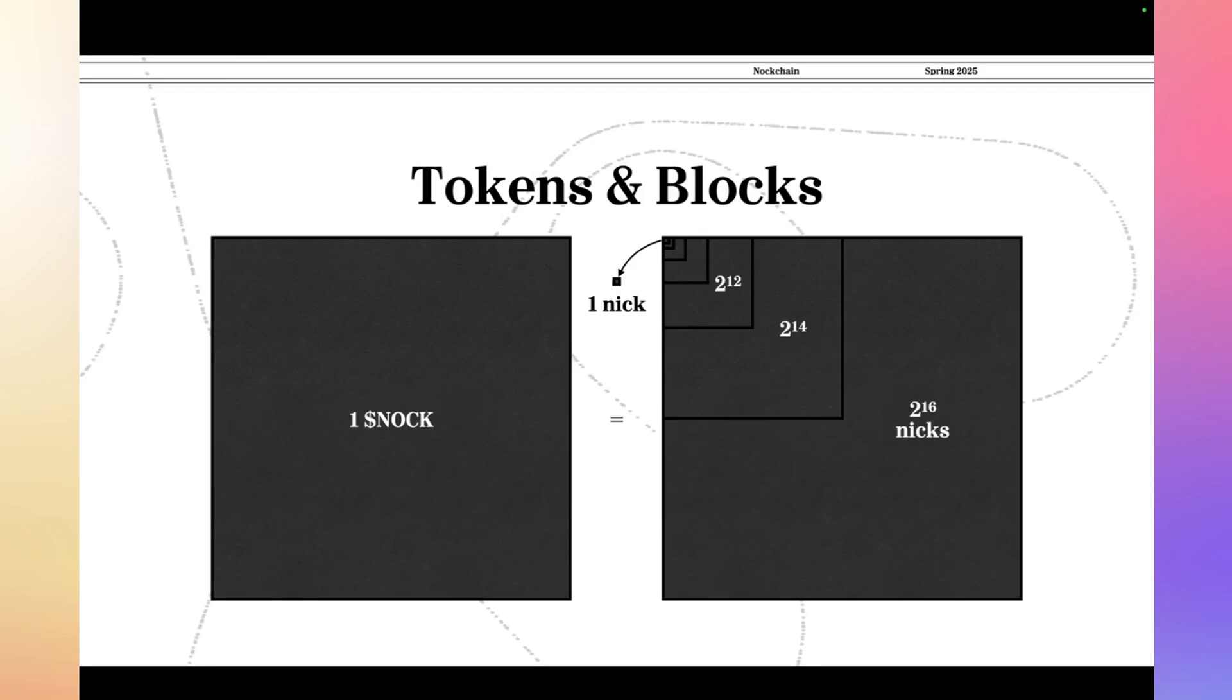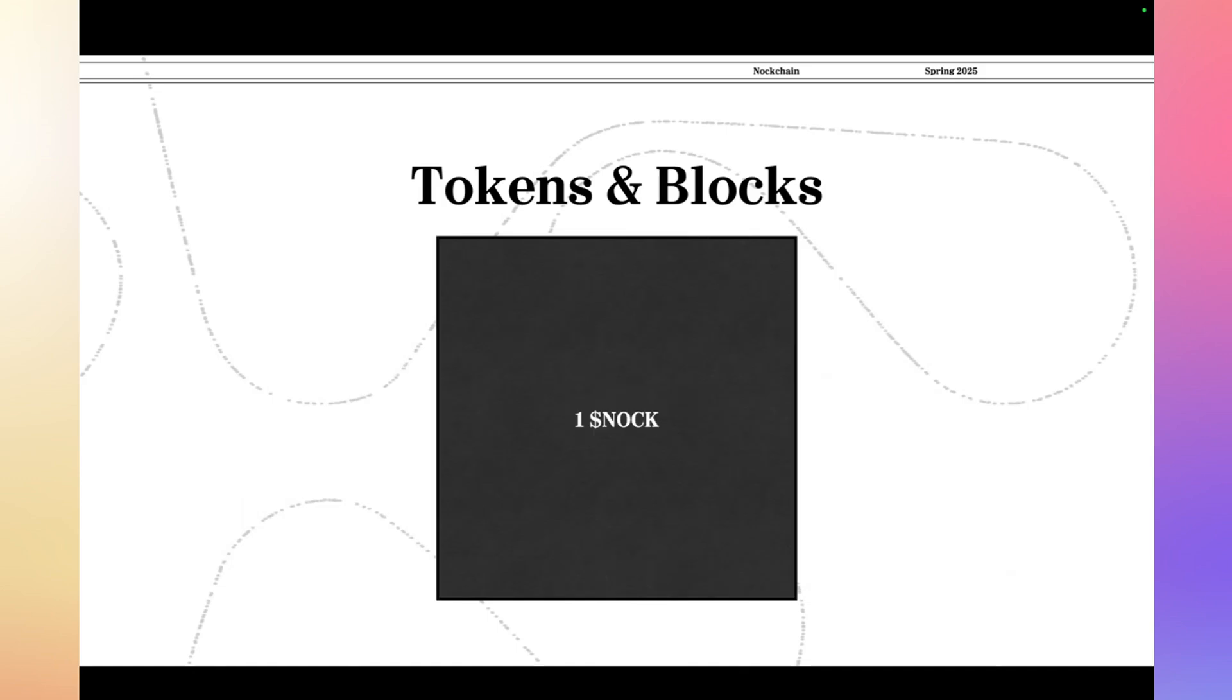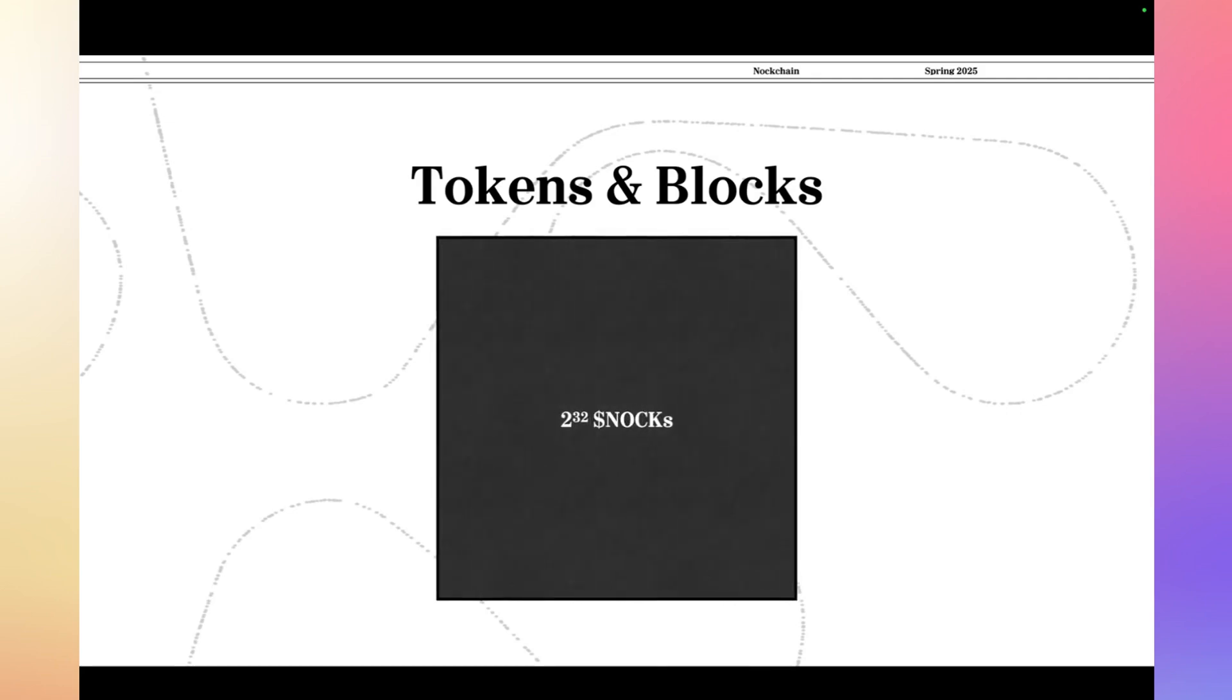The fungible token on NOC chain is a NOC. Colloquially, we can say a NOC token or a NOC coin. We're just going to call it a NOC here, which does have some ambiguity with the name of the language, which is NOC. These are subdividable into 2 to the 16th components or NICs. The total supply is a little more than 4 billion, which is 2 to the 32 NOCs. That means that the NOC token is hard capped and deflationary.